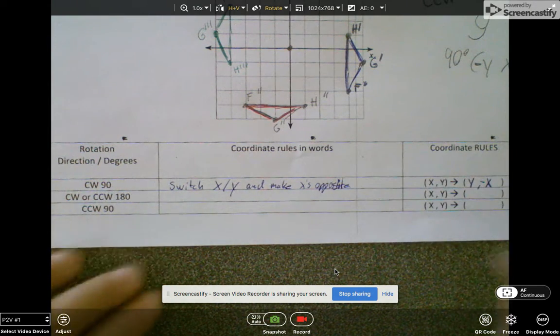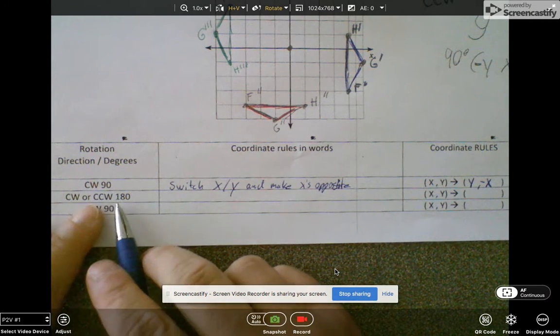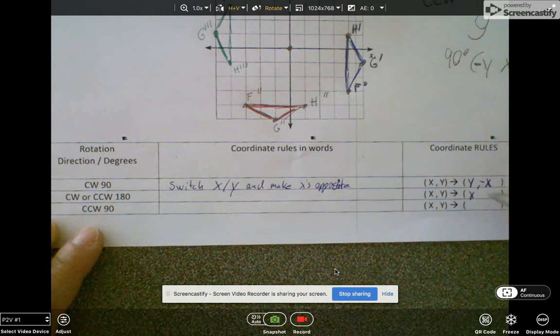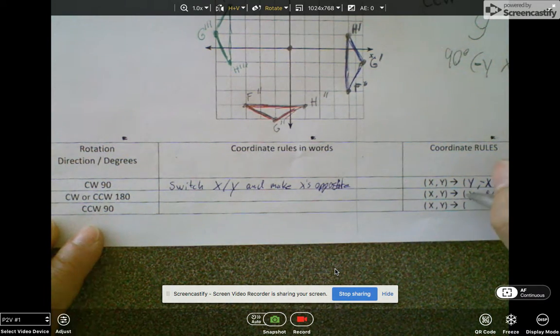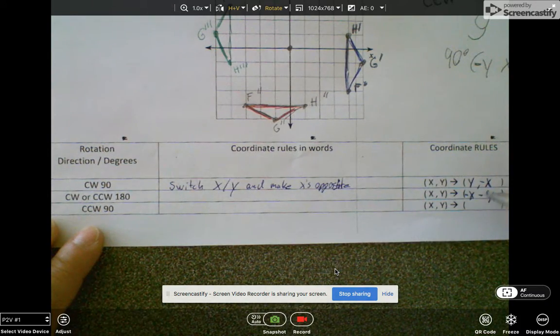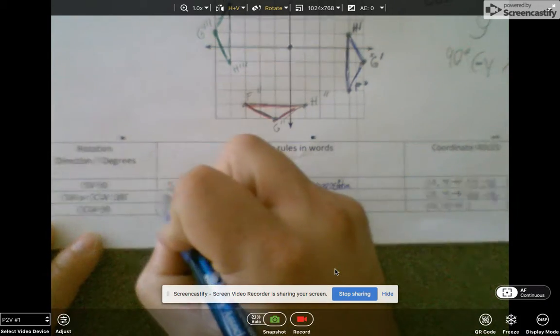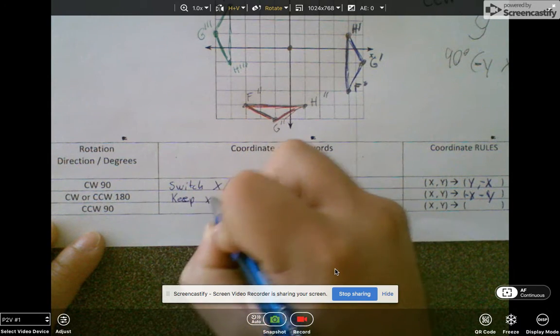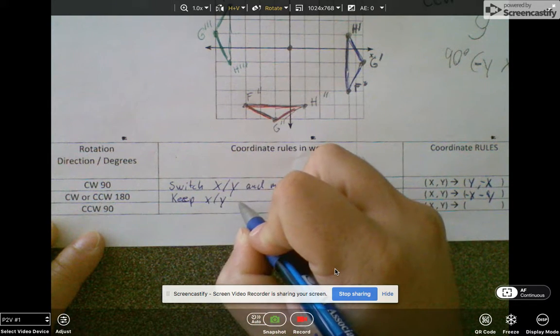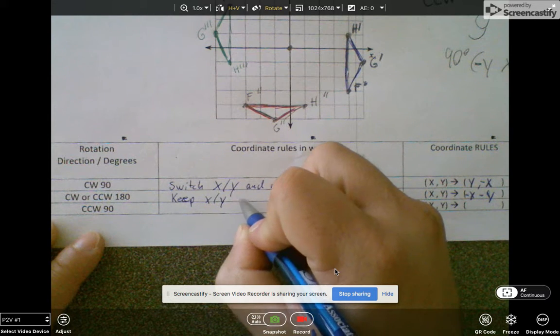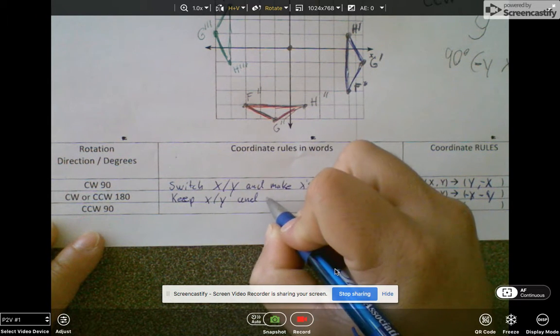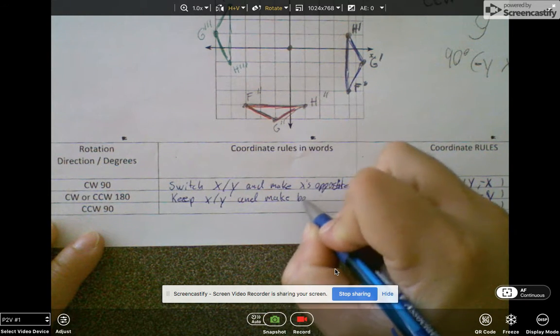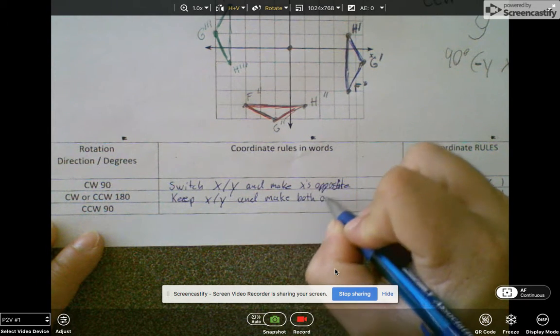And then for 180 degrees, those were the easiest. You just keep the X and Y in the same position. Make the X opposite and the Y opposite. So we'll just say, keep X/Y and make both opposite.